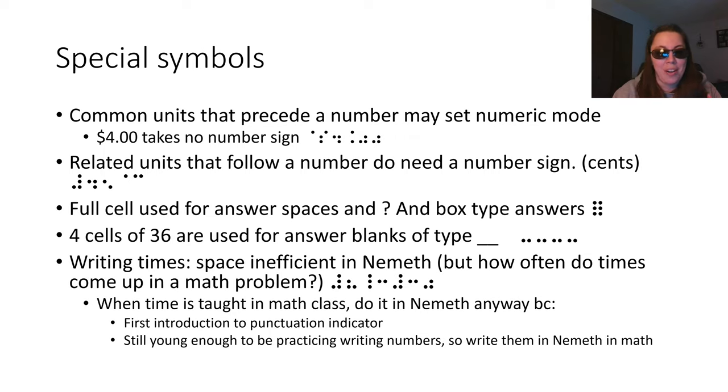If it comes first it will even set numeric mode for you so if you're writing four dollars you can just put the dollar sign four decimal zero zero if you're in nemeth mode which saves you some space. Of course if it comes after the money then you would need to have the numeric indicator first. Remember that braille readers perceive braille linearly. It's not like print where you can see the number and the cent sign all at the same moment, they happen in order. So start with a numeric indicator if you're using something like cents that comes at the end.